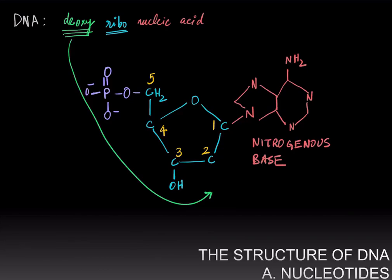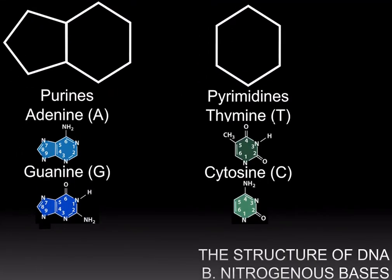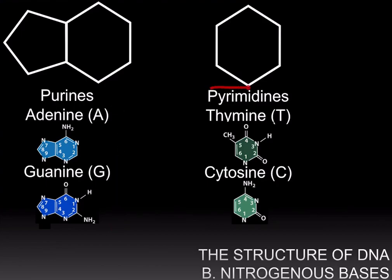Now there are four nitrogenous bases that are possible. Purines have a double ring structure with nitrogens at the first, third, seventh, and ninth positions, and there are two purines: adenine and guanine. Pyrimidines have a six-atom ring with nitrogens replacing carbon at the first and third positions, and there are two pyrimidines: cytosine and thymine.